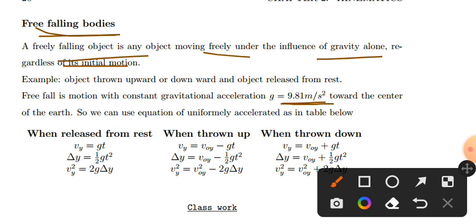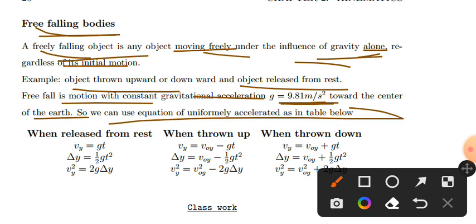When we neglect air resistance, objects fall with constant gravitational acceleration. Free falling objects released from rest move downward with constant gravitational acceleration toward the center of the earth. So we can use equations of uniformly accelerated motion as in the table below.